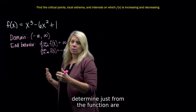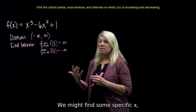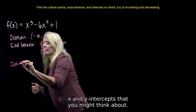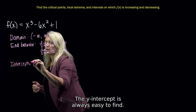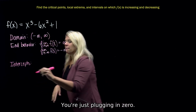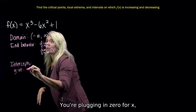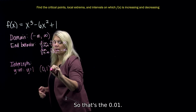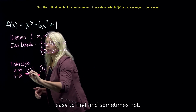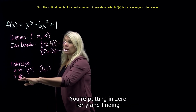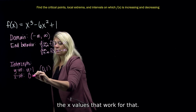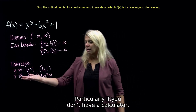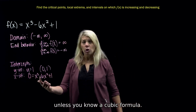Other things you might determine just from the function are specific XY points and intercepts. The Y-intercept is always easy to find — just plug in zero for X — so you get Y equals one, giving the point (0, 1). The X-intercept requires setting Y equal to zero and solving for X.